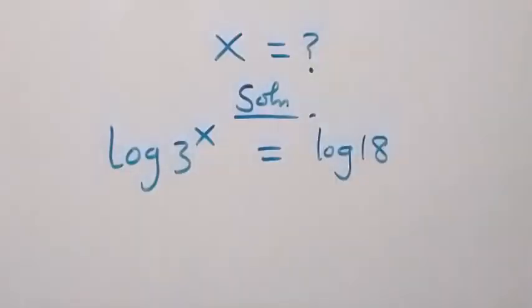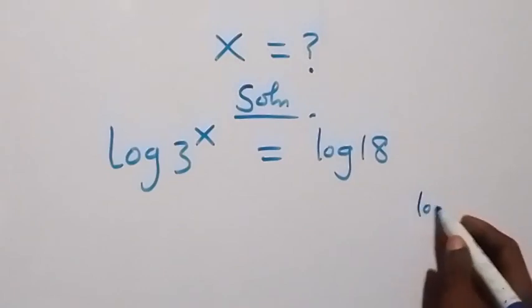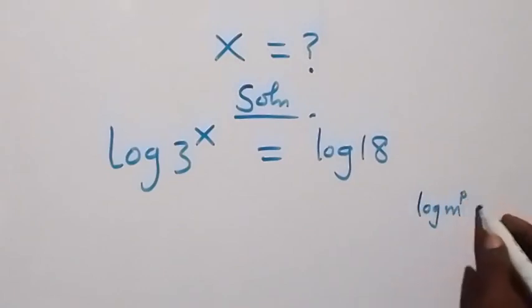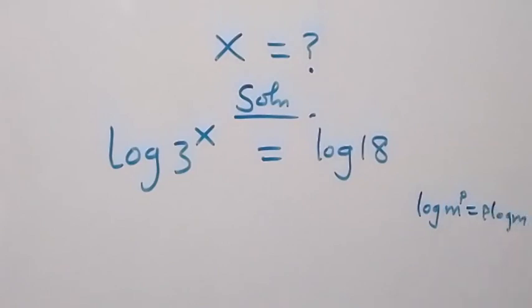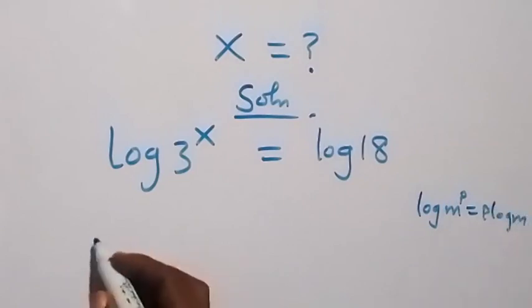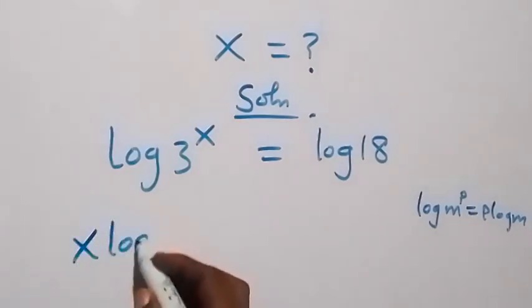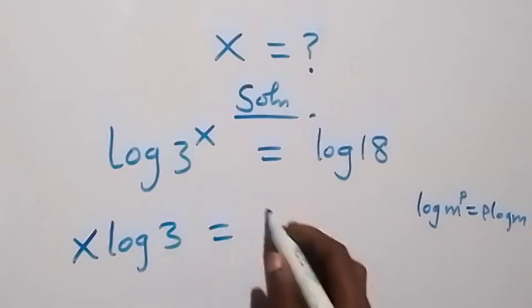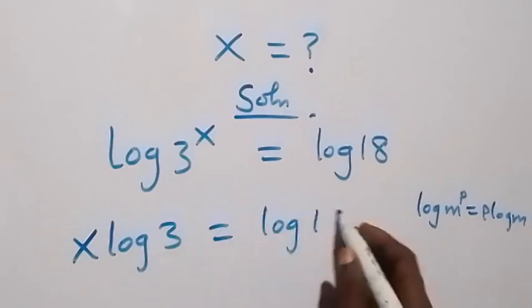Then, applying the power rule of logarithms, we have log n to power p is the same thing as p log n. Then what we have here becomes x log 3 equals to log 18 on this side.